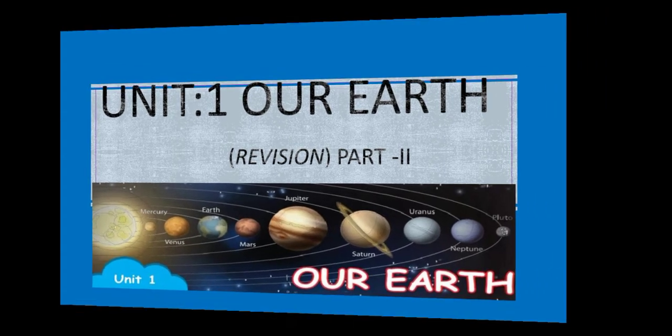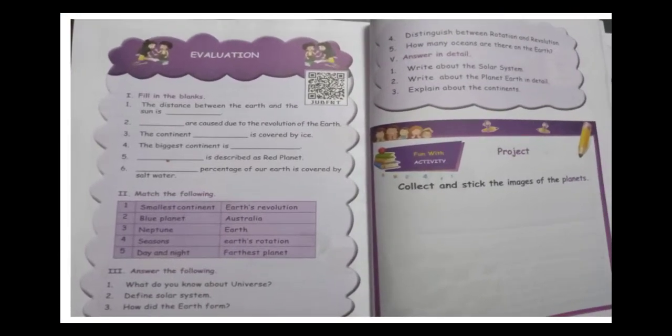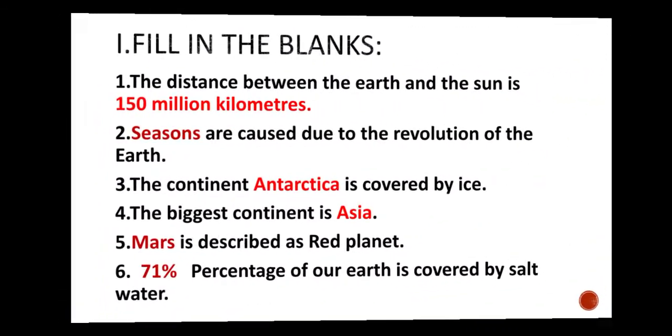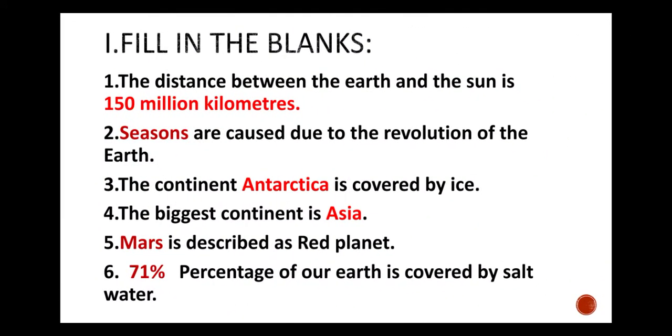Students, our first evaluation part is fill in the blanks. The first question is the distance between the earth and the sun is. Answer is 150 million kilometers. The second question: seasons are caused due to the revolution of the earth. Answer is seasons.